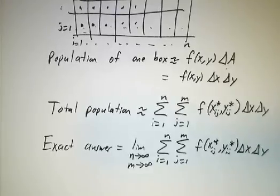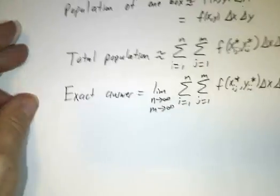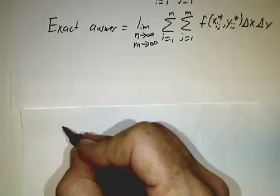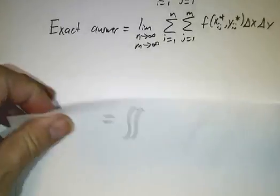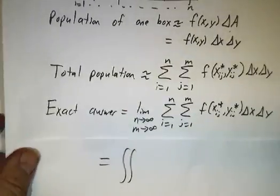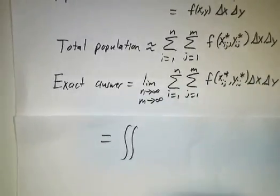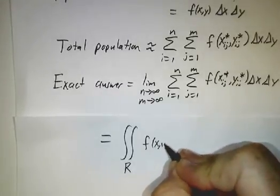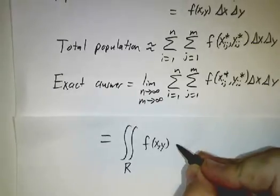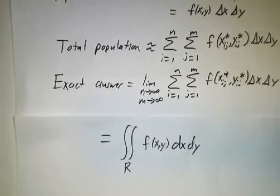This is exactly the same procedure as for one-dimensional integrals, so we call this a two-dimensional integral. We use two integral signs to show that we're integrating over a two-dimensional region. We write the integral over region R — in this case the state of Colorado — of the function of x and y, dx dy.